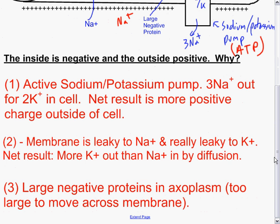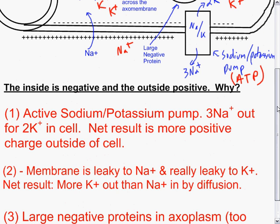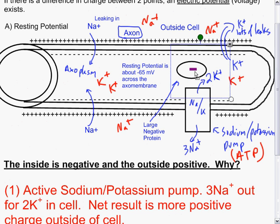And the third reason is that inside there are large negative proteins in the axoplasm. These are too large to move across the membrane, and it's represented by this structure right here. So we have large negative proteins to help keep the inside negative. If you measure the potential across this membrane, it's about negative 65 millivolts.